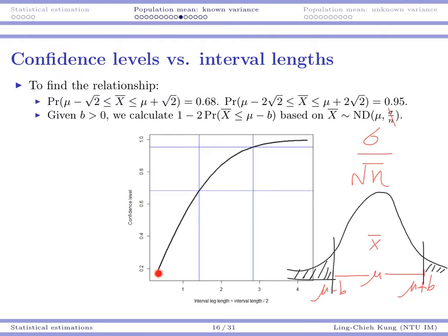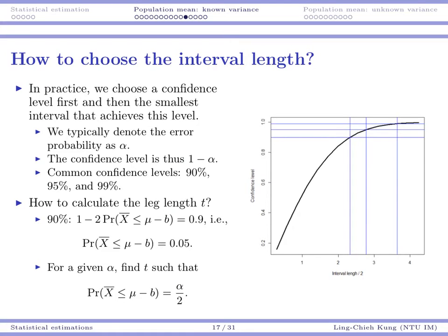If we do all the calculations for a lot of even leg lengths, we can draw a curve like this. When you have a larger leg length, you are going to have a larger confidence level, naturally. For example, these are our two examples: square root of 2 gives around 68%, and 2 square root of 2 gives around 95%. You can repeat this for all other values and show that indeed, when your leg length becomes larger, your confidence level becomes larger.